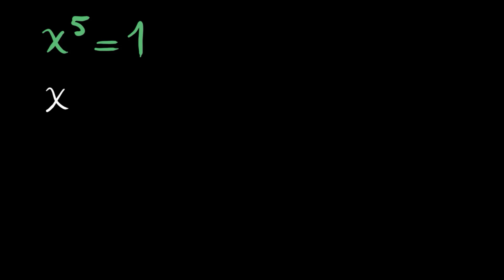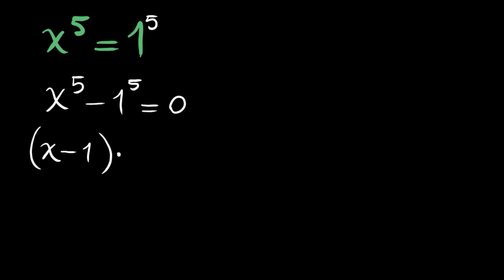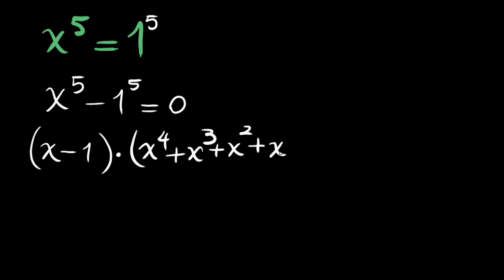Let me write this as x to the power of 5 minus 1 to the power of 5, which is equal to 0. This can be factored as (x minus 1) times (x to the power of 4 plus x cubed plus x squared plus x plus 1), and this is equal to 0.